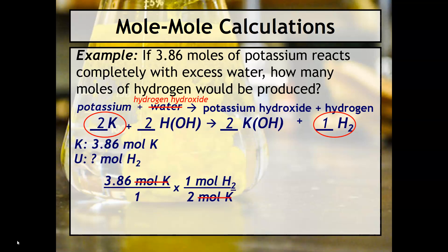And then moles of potassium and moles of potassium divide out and you're left with moles of hydrogen. So you'll divide 3.86 moles by the two moles and you should get 1.93 moles of hydrogen. This is called a mole-mole calculation. The reason why is because we start with moles, like here, moles of K, and we're ending with moles, like here, moles of hydrogen.